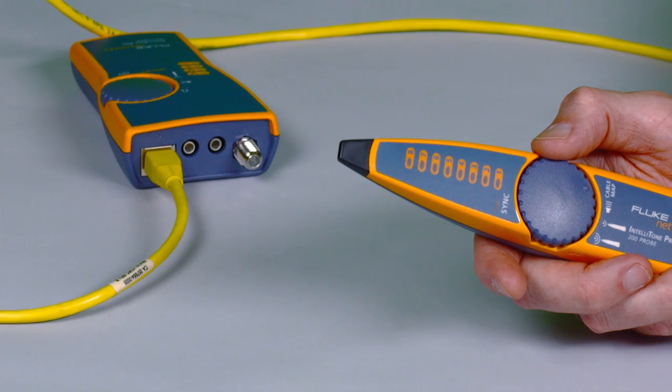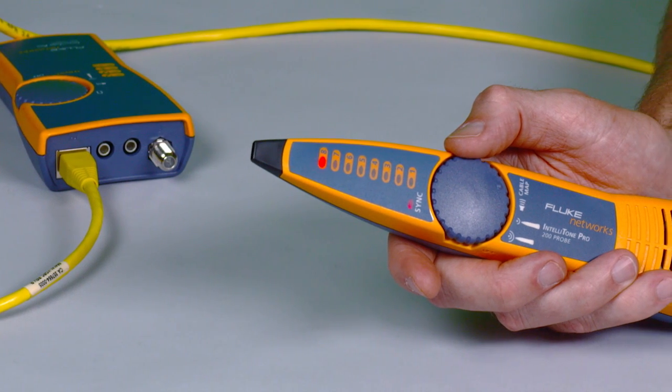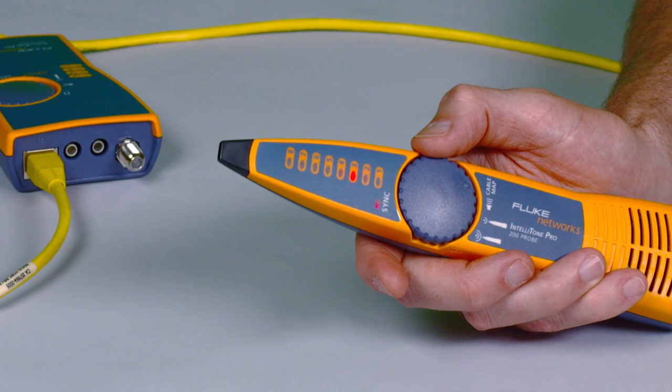Validate wire maps in a flash, finding the most common wiring faults on twisted pair cabling, such as shorts, opens, and crossed pairs.